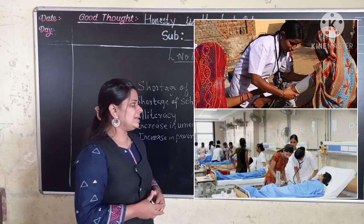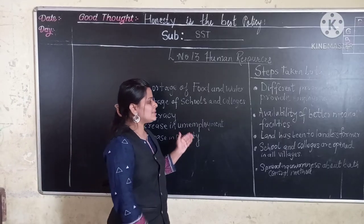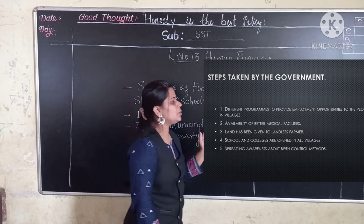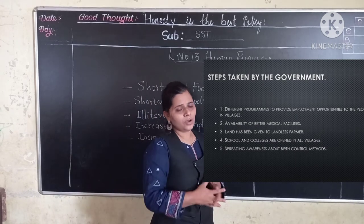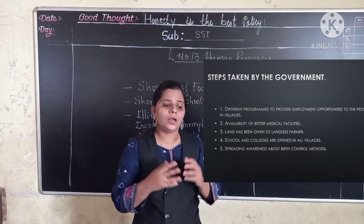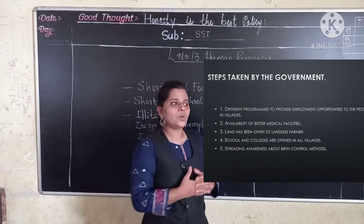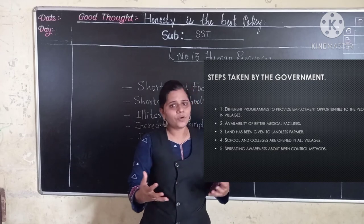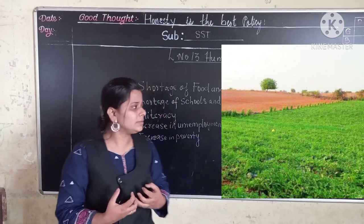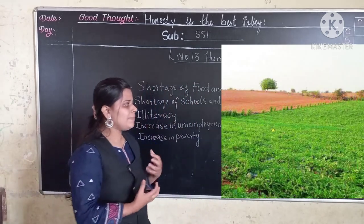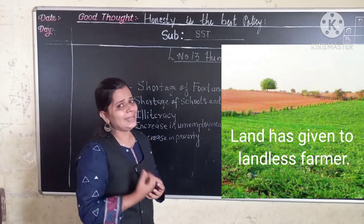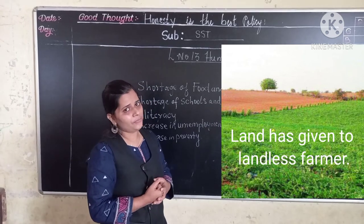The next step is that land has been given to landless farmers. The farmers who do not have land for agriculture — the government has been providing land to these landless farmers.